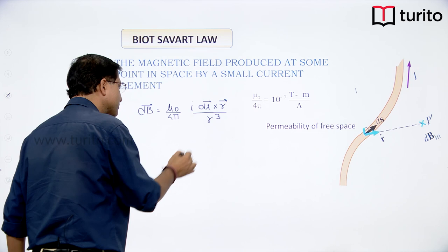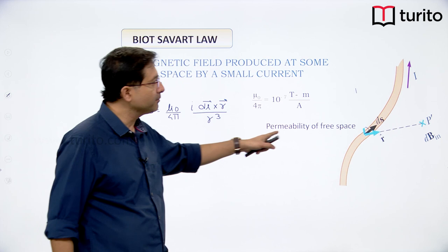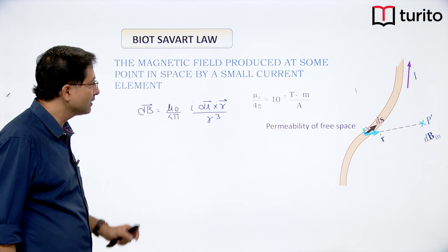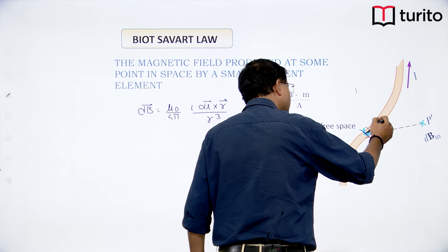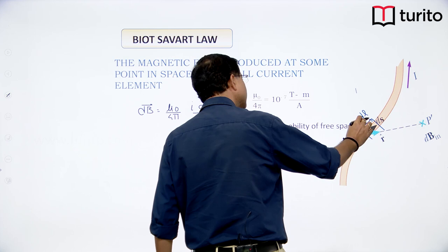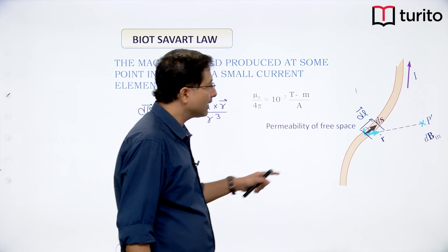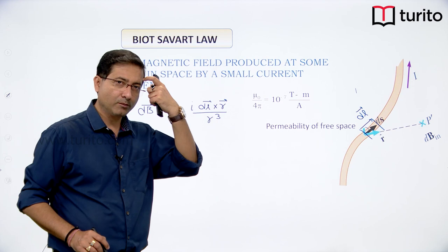Experimentally we have this expression where μ₀/4π is a constant. μ₀ is the permeability of free space, and the value of μ₀/4π is 10⁻⁷ — similar to 1/(4πε₀). Here dL is defined as a vector whose direction is along the direction of current. The r⃗ vector is the position vector of the point where the field is to be calculated, with respect to the element.